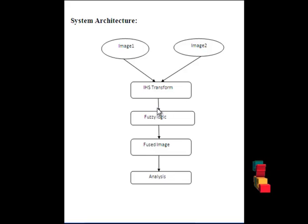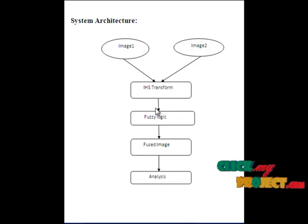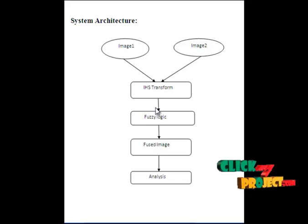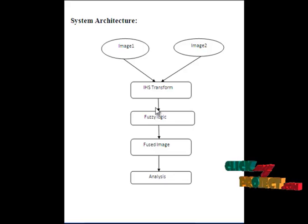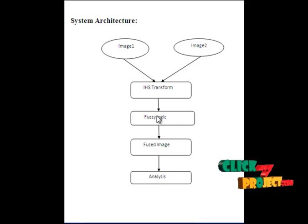The transformed image is passed to the fuzzy logic. The fuzzy logic is used to generate the fusion. Initially we generate the membership function, where images are passed as a matrix ranging from 0 to 255. Then we make rules for the provided input image. These generated rules and the membership function are saved as a FIS file.